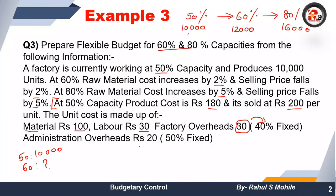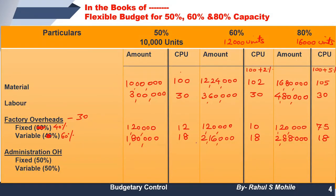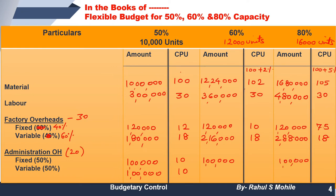Now administration overhead is 20, and 50% is fixed. So fixed = 10, variable = 10. Fixed amount stays 1,00,000 (10 × 10,000) across all capacities. Dividing 1,00,000 by 12,000 gives CPU of 8.33; dividing by 16,000 gives CPU of 6.25. Variable per unit remains 10: so 10 × 12,000 = 1,20,000, and 10 × 16,000 = 1,60,000.